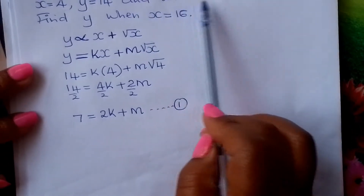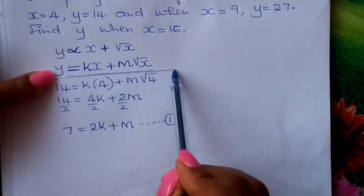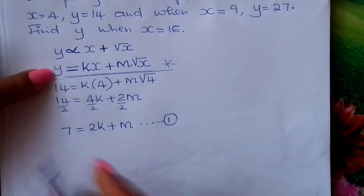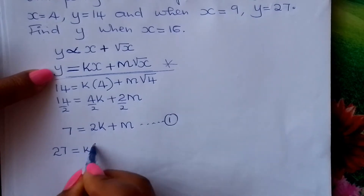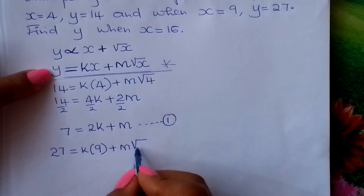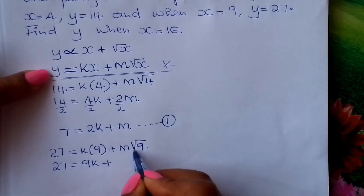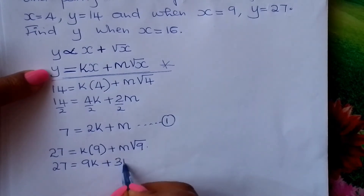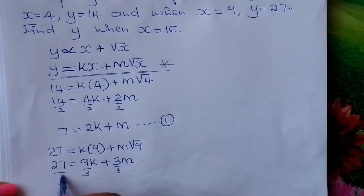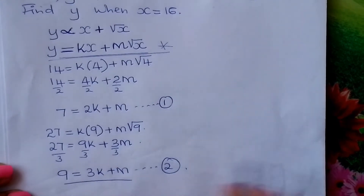Continuing with the problem: when X is 9, Y is 27. Substituting into our equation: 27 equals 9K plus M times the square root of 9. This gives us 27 equals 9K plus 3M. Dividing by 3 to simplify: 9 equals 3K plus M. This is your second simultaneous equation.